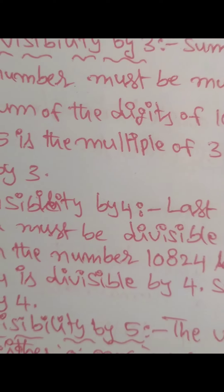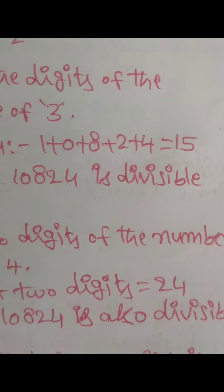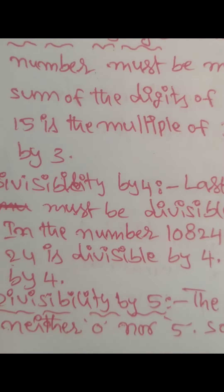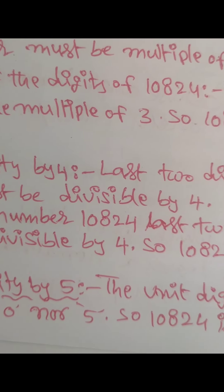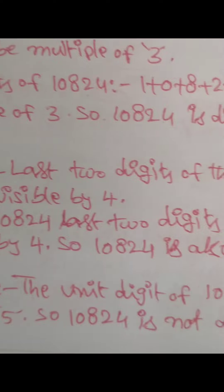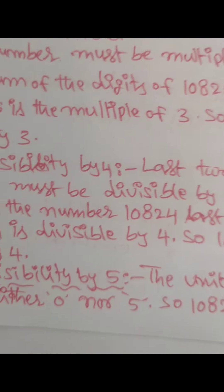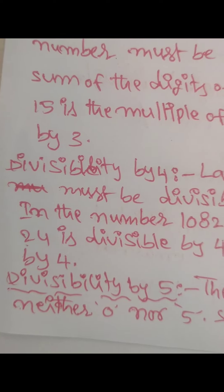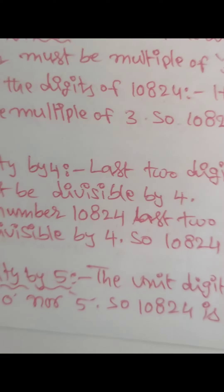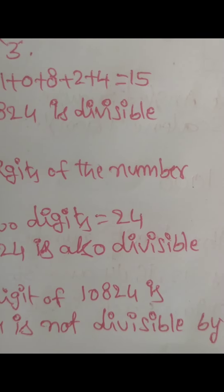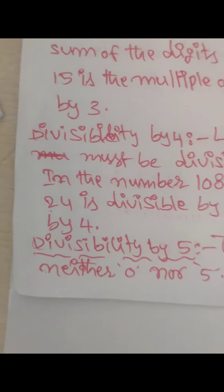Check divisibility by 4. Last two digits of the number must be divisible by 4. In the number 10,824, last two digits are 24. So 24 is divisible by 4. 24 comes in 4 table 6 times. So 24 is divisible by 4. So the given number is also divisible by 4.